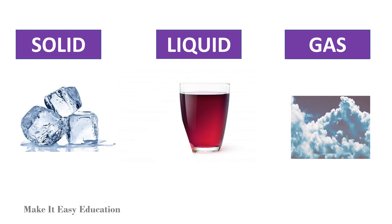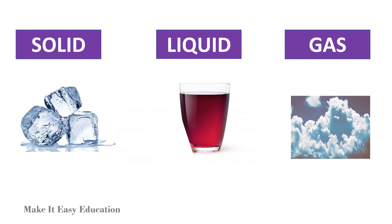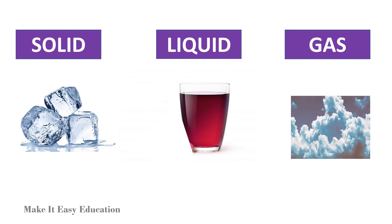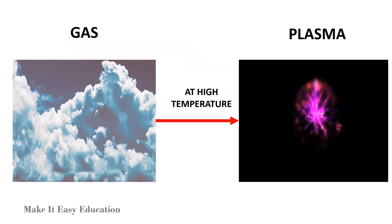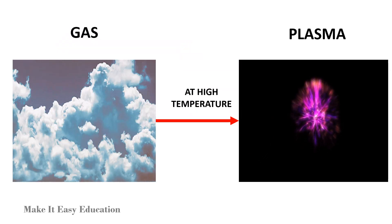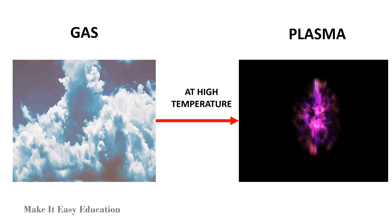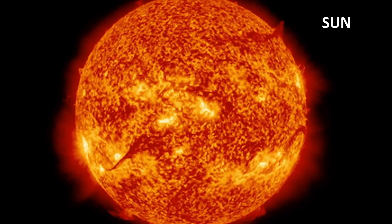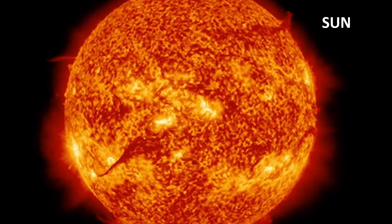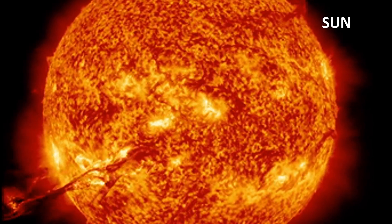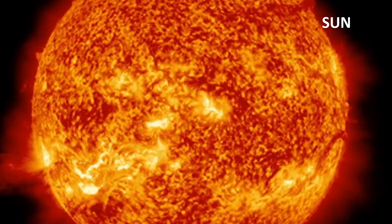Solid, liquid, and gas are three states of matter found on the earth. There is another state of matter called plasma. Plasma occurs when gas is heated at very high temperatures. Stars, including the sun, are mostly made of plasma. On earth, lightning or thunderbolts make plasma.